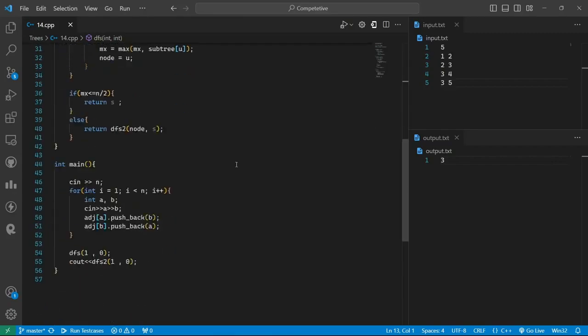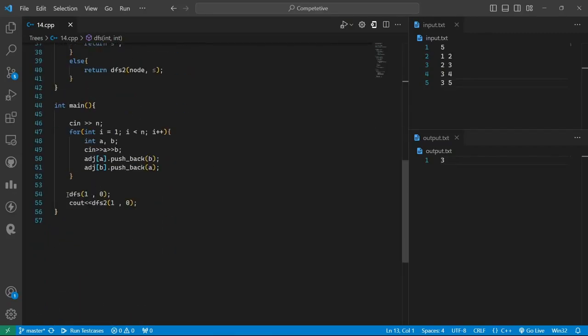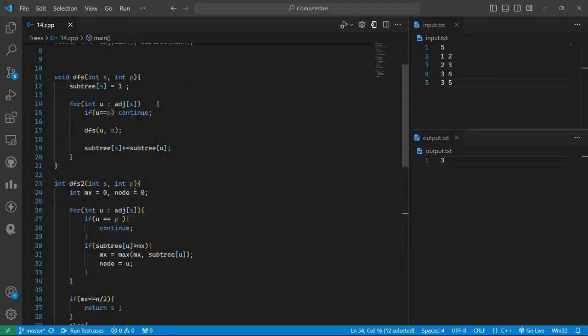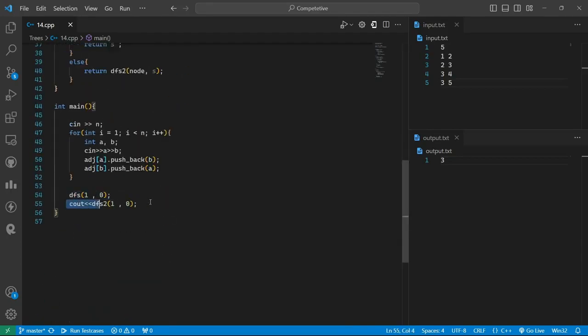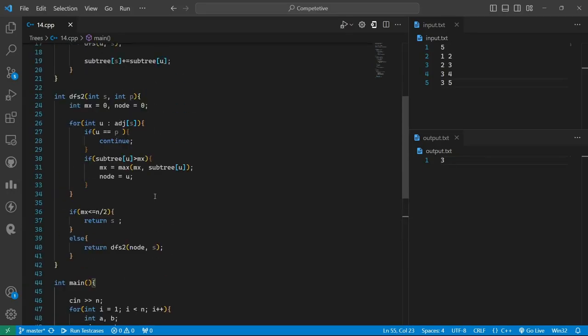Now let us look at the code. Firstly, we will call the first DFS to calculate the subtree sizes, and then second DFS would check for the subtree sizes of all the children. And if the maximum of it is less than or equal to n by 2, it will return the particular node, or it will run the DFS for the node with the highest subtree size.